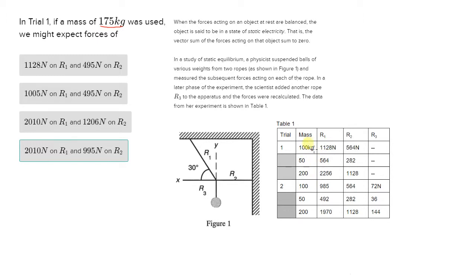So if we're looking at the table, we can see that the trends are that as the mass increases, so do the forces on R1 and R2. As it goes from 50 kilograms to 100 kilograms, we see that the forces double. As we go from 100 kilograms to 200 kilograms, we see the forces double again. So the higher the mass of the object, the higher that the forces should be.